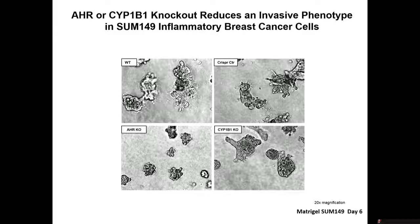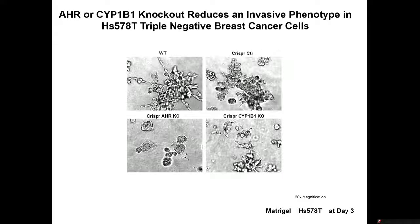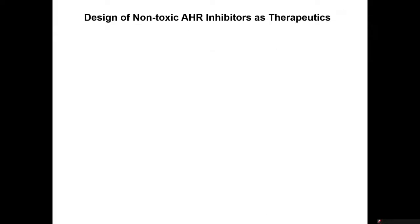Interestingly, when we made CYP1B1 knockouts, we saw a similar phenotype — I wasn't expecting that; I thought it would be a negative control. We don't know what that's about, but it suggests CYP1B1 by itself somehow controls some downstream effects seen in cancer. In the HS57AT triple negative cell line, the wild type and CRISPR knockout grow very ugly in multiple fields. But the CRISPR AHR knockout cells just sit there like balls — they're fine, they just don't want to dig out into the matrigel. And the CYP1B1 knockout turns out to be sort of in between.